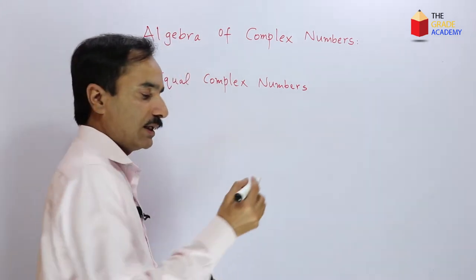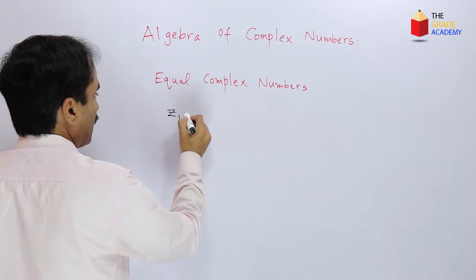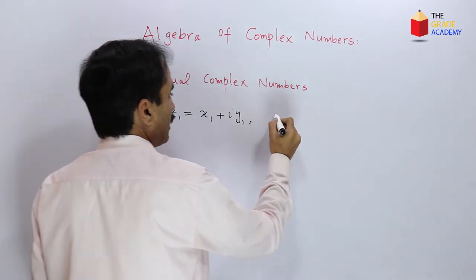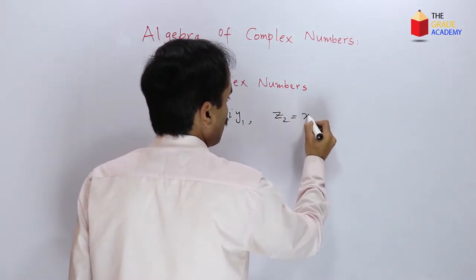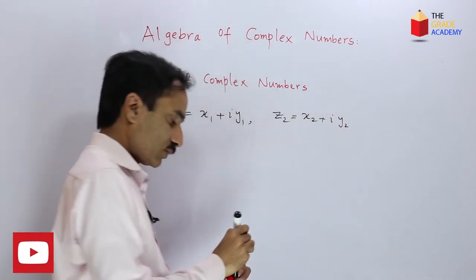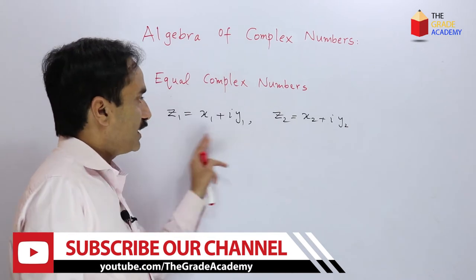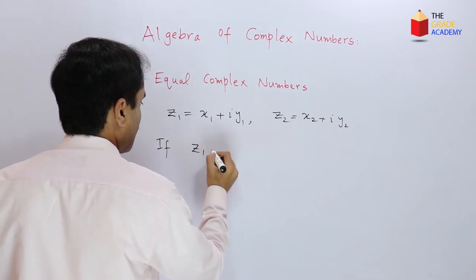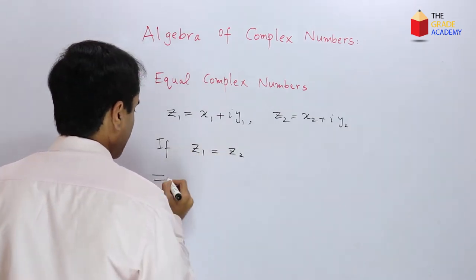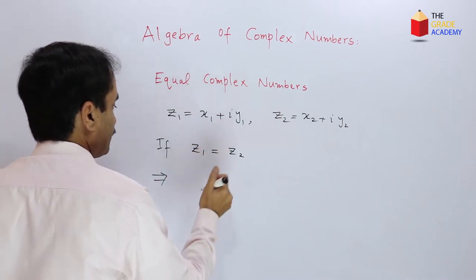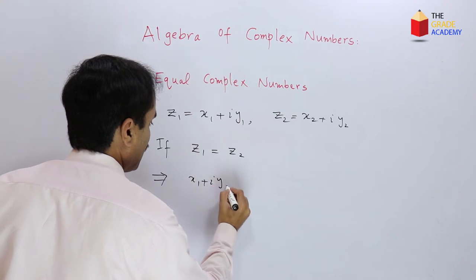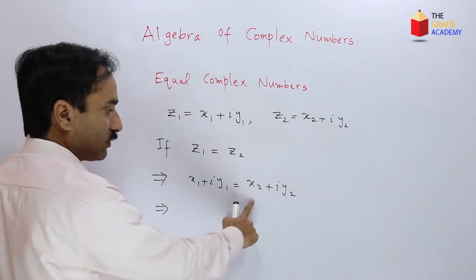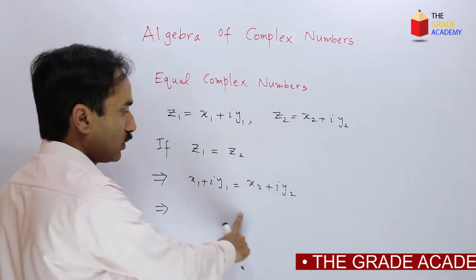Two complex numbers, let's say z1 equals x1 plus i·y1 and z2 equals x2 plus i·y2. If these two numbers are equal — if z1 is equal to z2 — then this implies that x1 plus i·y1 is equal to x2 plus i·y2, which implies that x1 is equal to x2 and y1 is equal to y2.